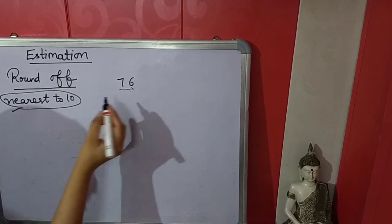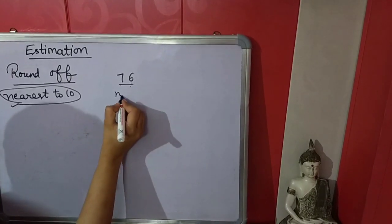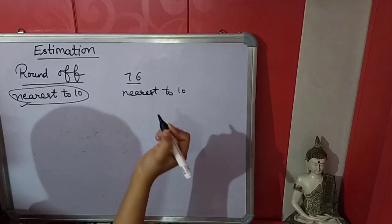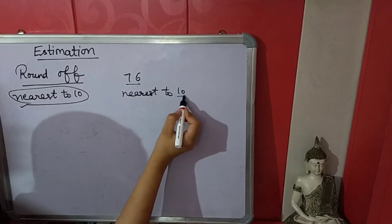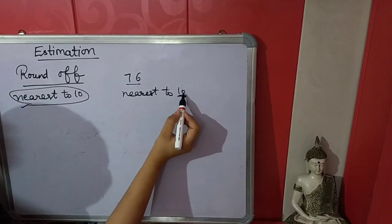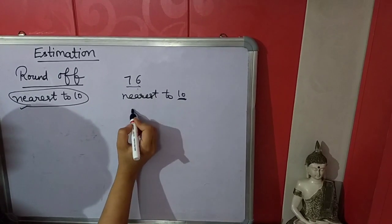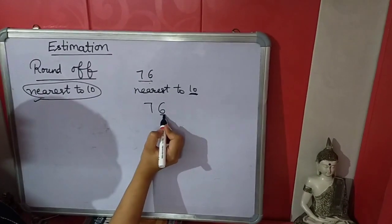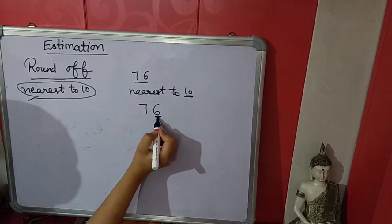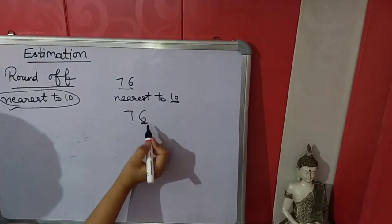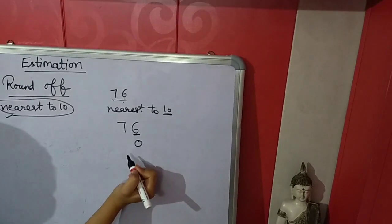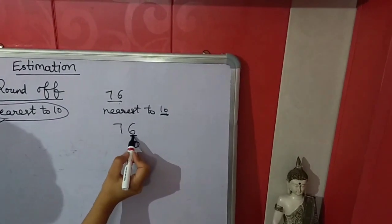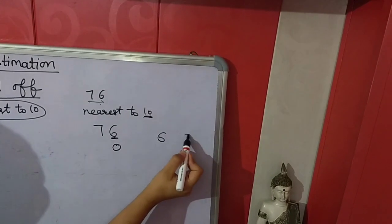How will we do the estimate? Nearest to 10 — we will check in 10 how many zeros are there: 1. So we will convert the last number, the one's digit, into 0.